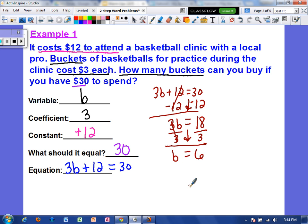But now we have to check. So that means if B equals 6, then 3 times 6 plus 12 should equal 30. Well, 3 times 6 is 18, and 18 plus 12 does equal 30, so we know our answer is correct.